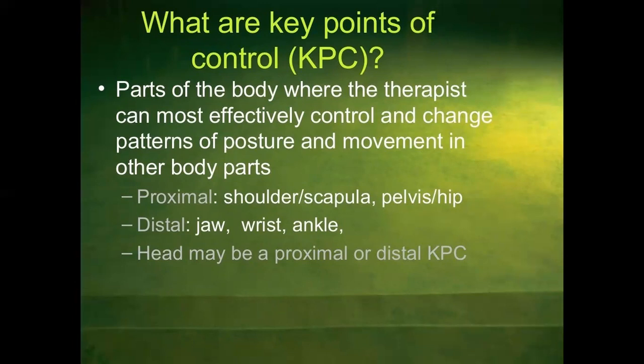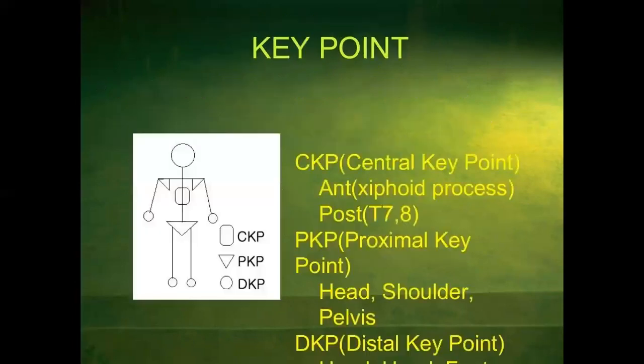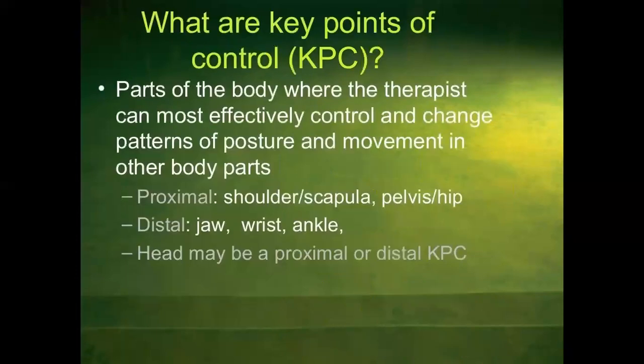Proximal key points include shoulders, scapula, pelvis, and hip. Distal key points include jaw, wrist, and ankle. The head may be proximal or distal. The central key point: anteriorly the xiphoid process, posteriorly T7 and T8. Posterior proximal key points are head, shoulder, and pelvis. Distal key points are wrist, jaw, and ankle.